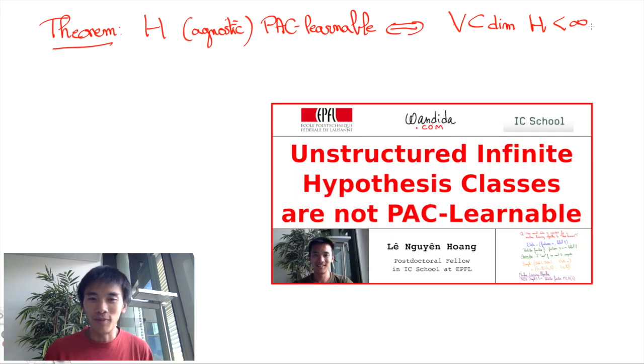In a previous video, we've almost proved that hypothesis classes with infinite VC dimensions are not PAC learnable. Roughly, the argument involves a no-free-lunch theorem that asserts that no matter what learning algorithm you use, there will always be some underlying function that will differ for roughly half of the unobserved and unconstrained features. Unfortunately, if the VC dimension is huge, such unobserved and unconstrained features are a non-vanishing fraction of all features, no matter how large the sample set is. This proves the left-to-right implication.